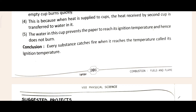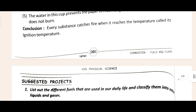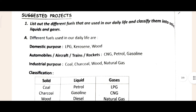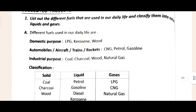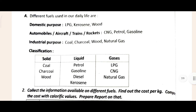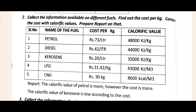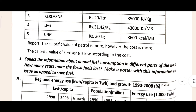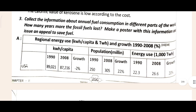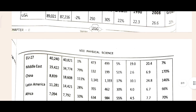The conclusion of the third experiment is also given. Then come to the suggested project work. The first project work and its answer are provided. The second project: collect information about fuels used by different people and find out the cost. The third project: collect information about annual fuel conservation in different parts of the world, with the answer provided.